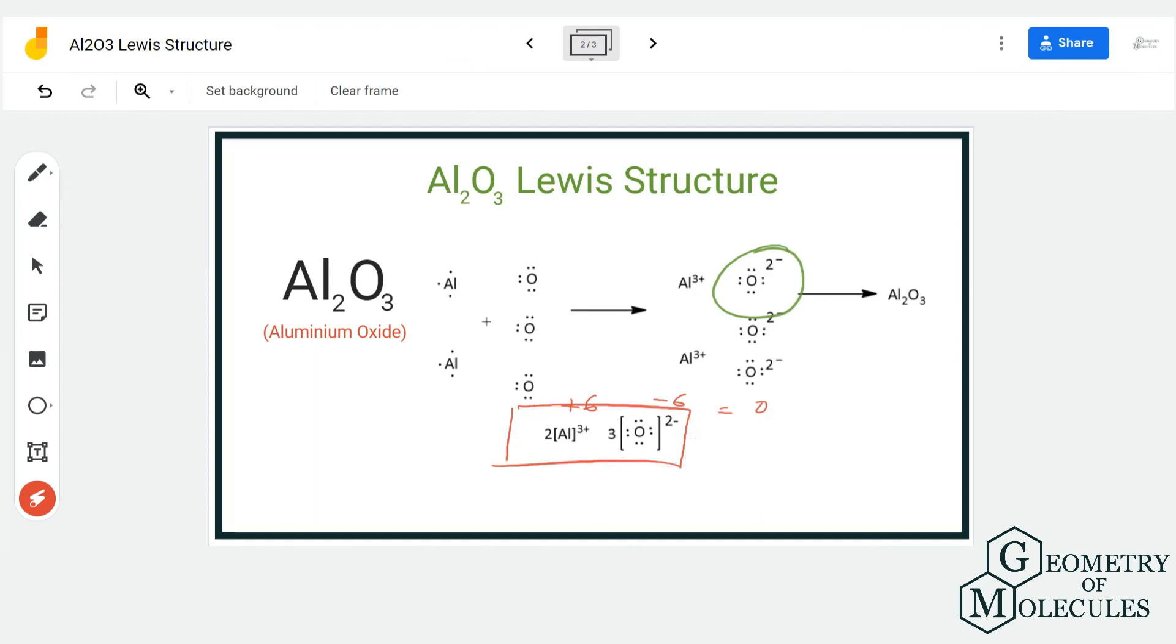So this is just a way to represent how the structure would look or how the electrons are transferred. This is just for the understanding part of it, but in reality, this is just one unit, and there are many such units in the crystal structure.